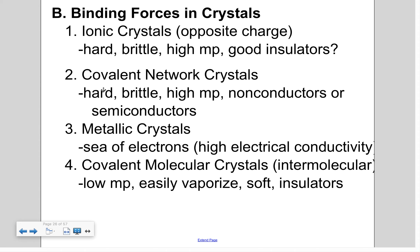Covalent network crystals are also hard, brittle, with high melting points, but they are non-conductors or semiconductors. Metallic crystals involve the sea of electrons — electrons are not held by a single nucleus, they flow from one nucleus to the other — resulting in high electrical conductivity. The fourth type, covalent molecular crystals, are held together by intermolecular forces, have very low melting points, are easily vaporized, soft, and considered insulators.